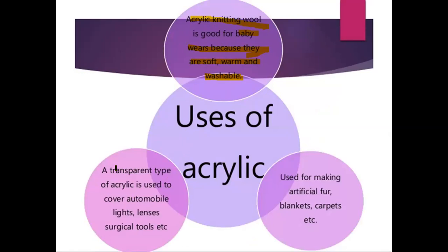A transparent type of acrylic sheet is used to cover the lights of automobiles — used as lenses for car lights. Acrylic is also used in surgical tools, for making artificial fur, blankets, carpets, and more.